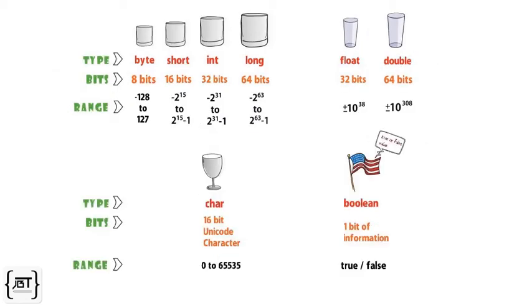A char holds a single 16-bit unicode character. Boolean represents one bit of information with only two possible values, true and false.